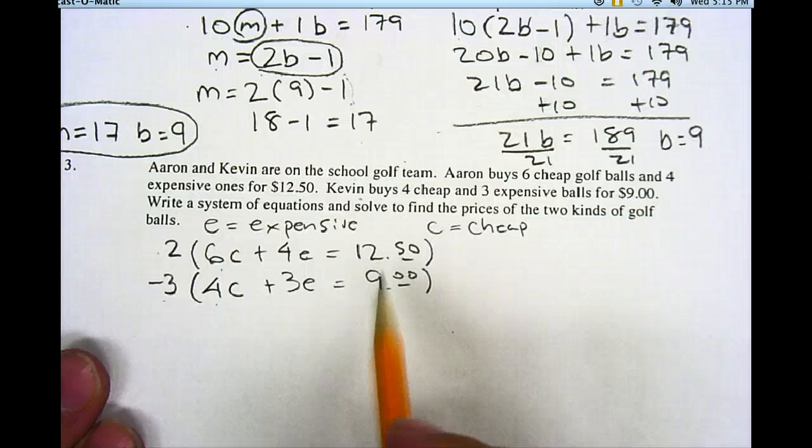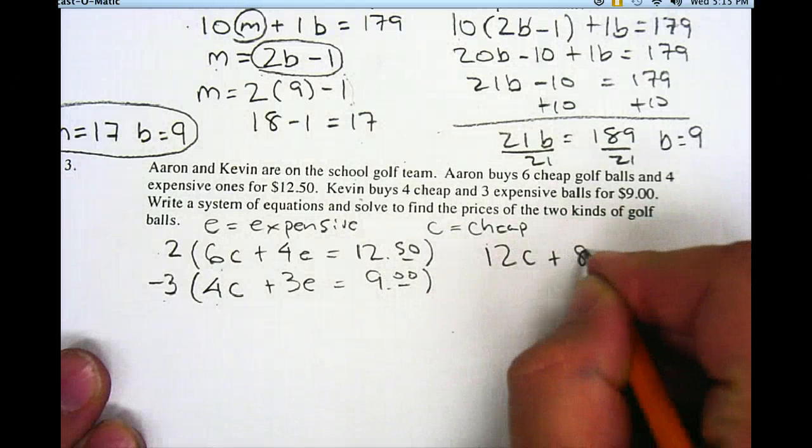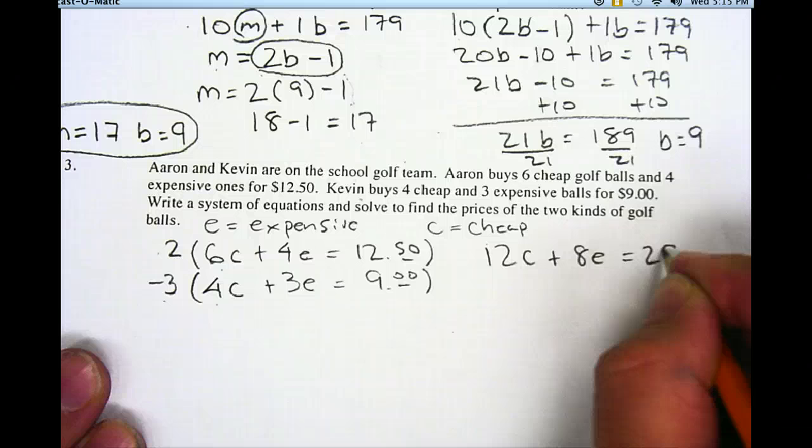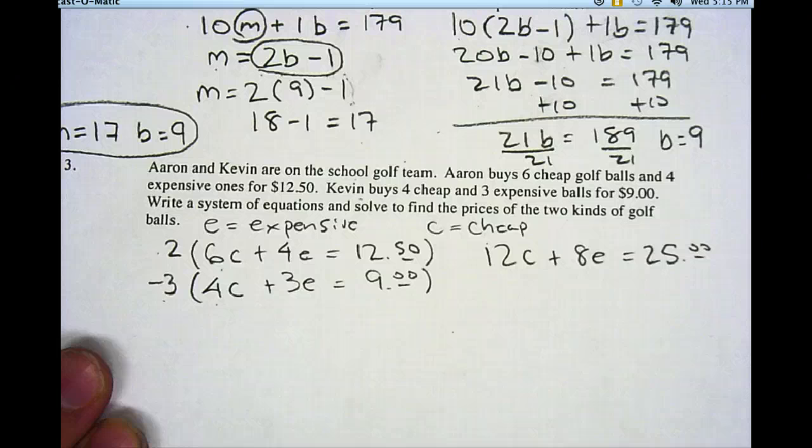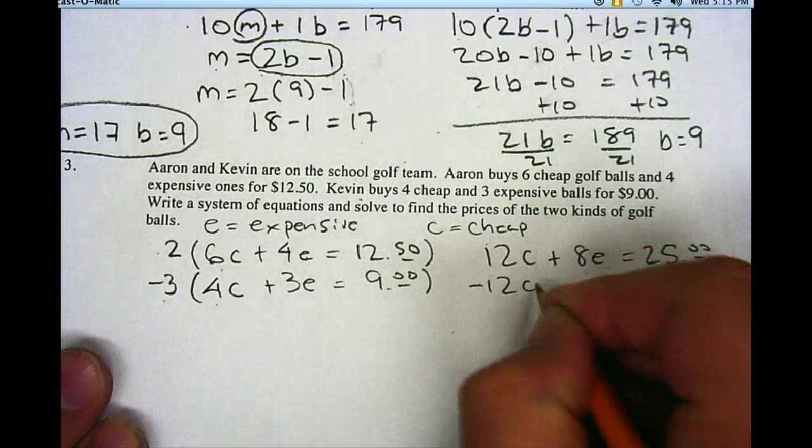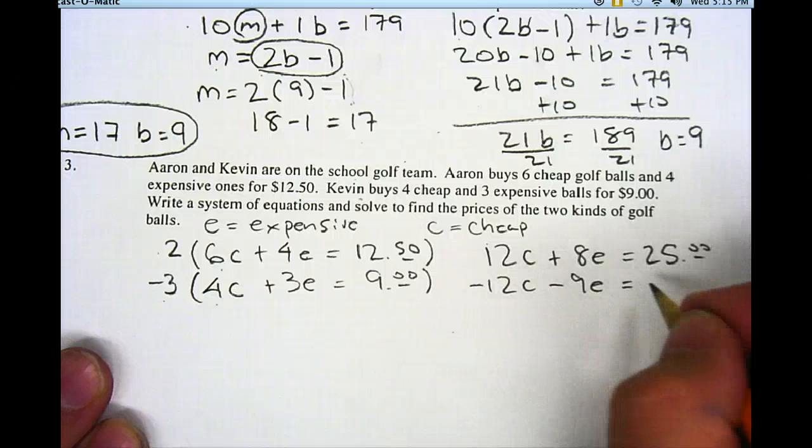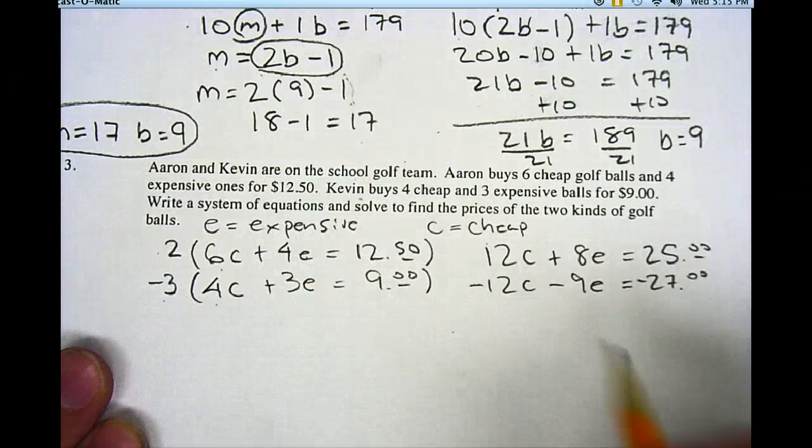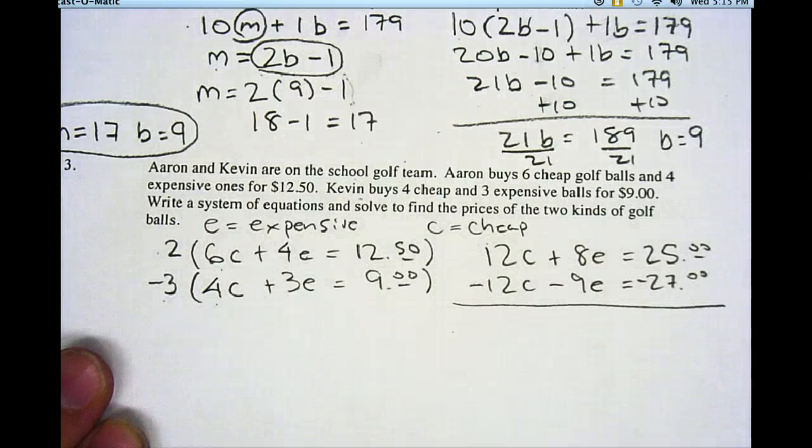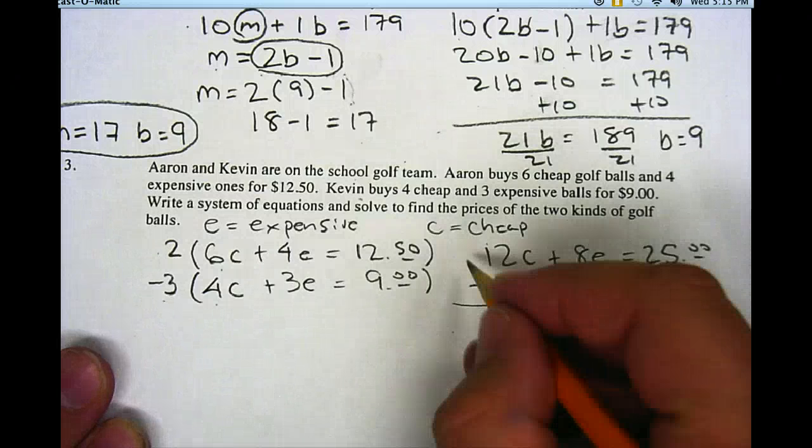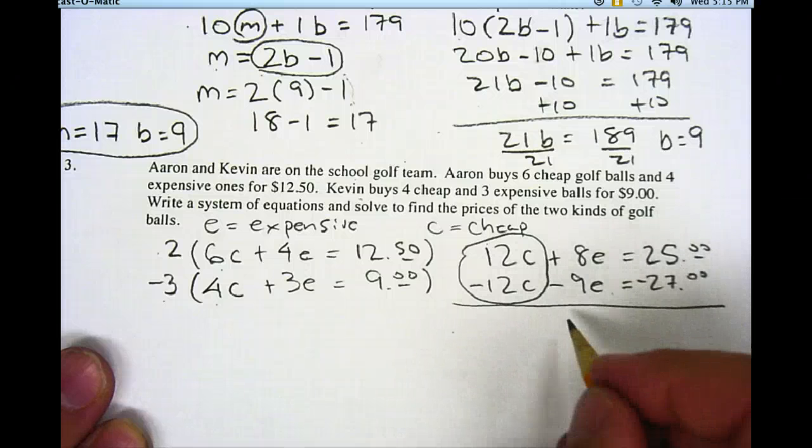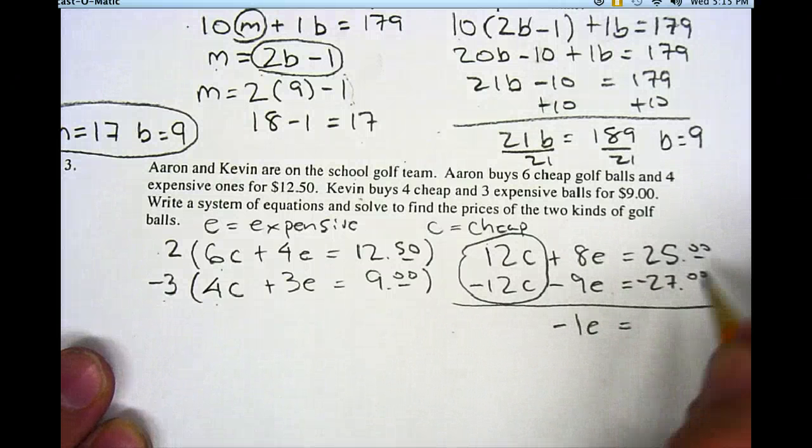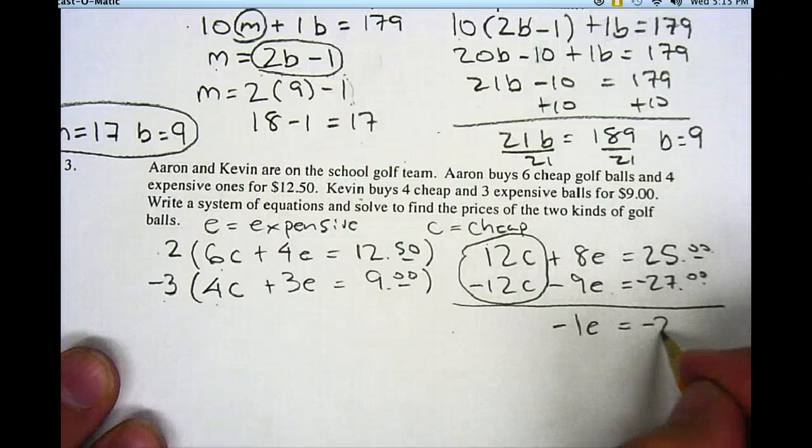If I take 2 times the top equation, I get 12C plus 8E is equal to $25. And if I take negative 3 times the bottom equation, I get negative 12C minus 9E is equal to negative $27. Now when I combine them, my positive and negative 12C cancel out and make 0. My 8E and my negative 9E, that's going to be negative 1E. 25 and negative 27 is negative $2.